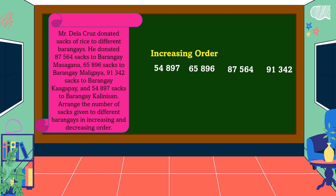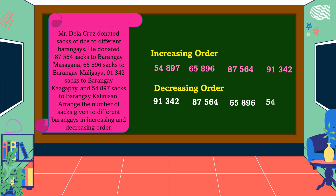Next, we will arrange the numbers in decreasing order. It is easier now because the numbers are already arranged in increasing order. We start from the largest number, which is 91,342, followed by 87,564. The third number is 65,896, and the last number is 54,897.